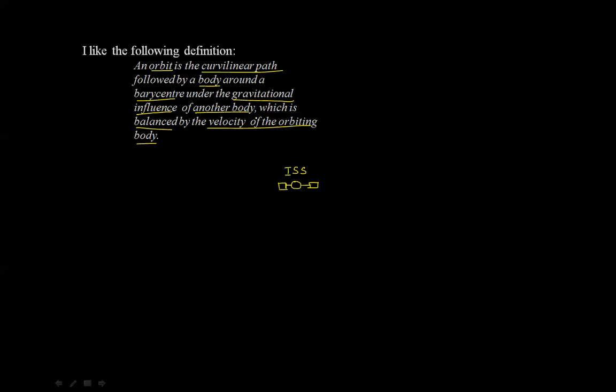The ISS is therefore a body that is in an orbit, which is a curvilinear path, around a barycenter. For now, let's not bother with the word barycenter. I will come back and define this word.